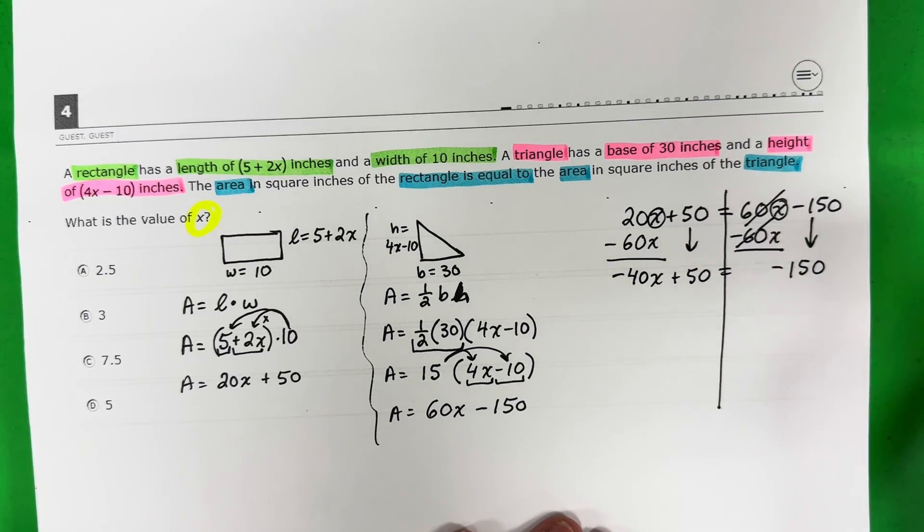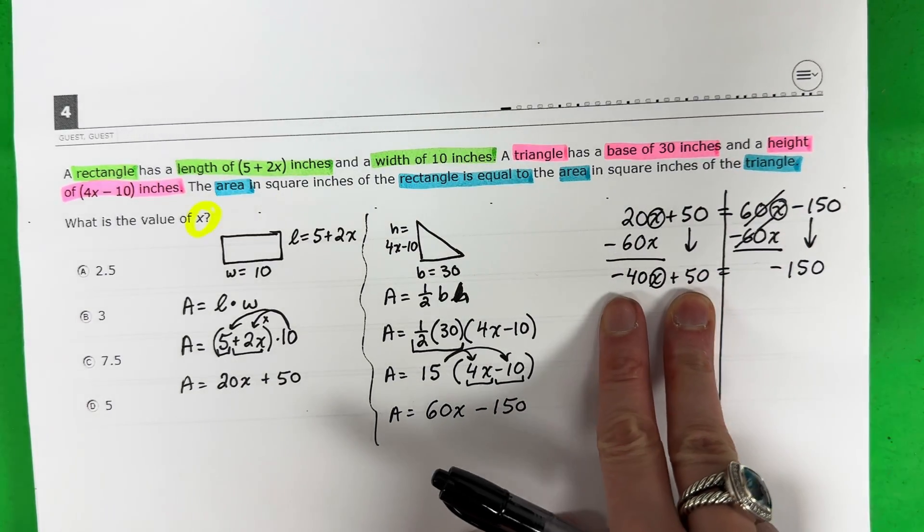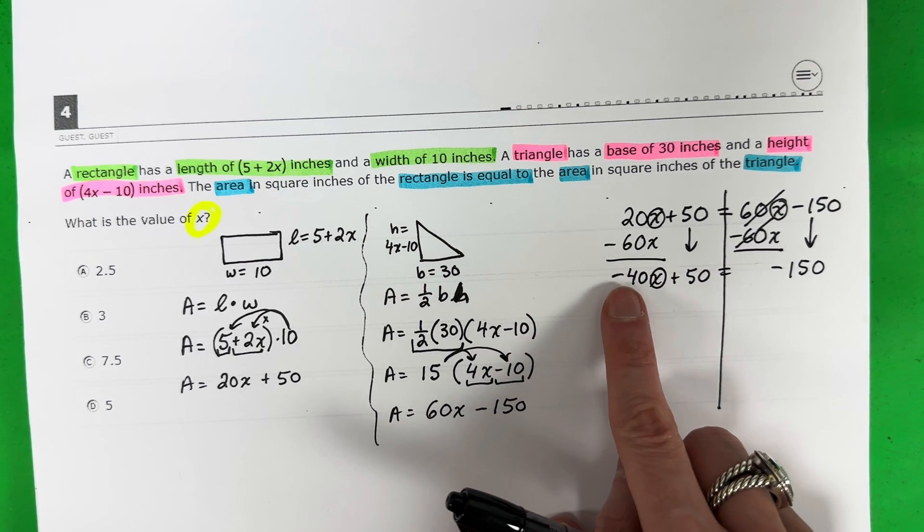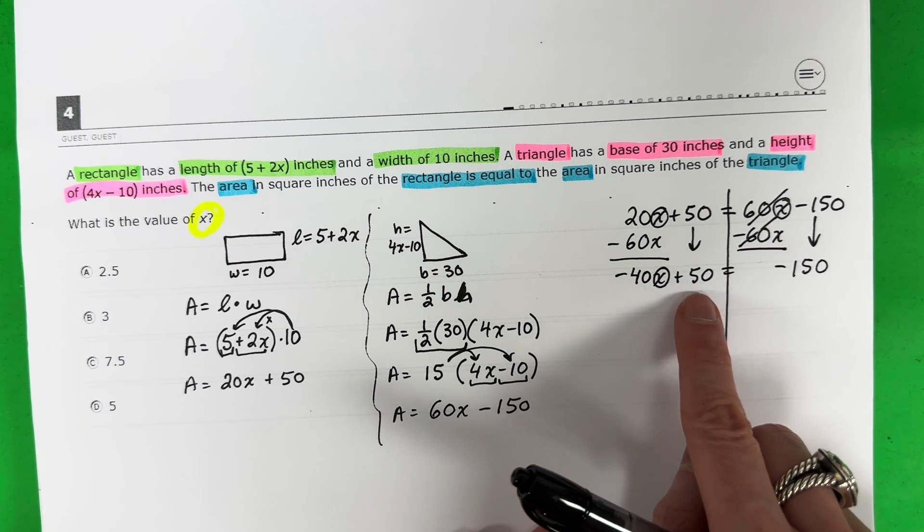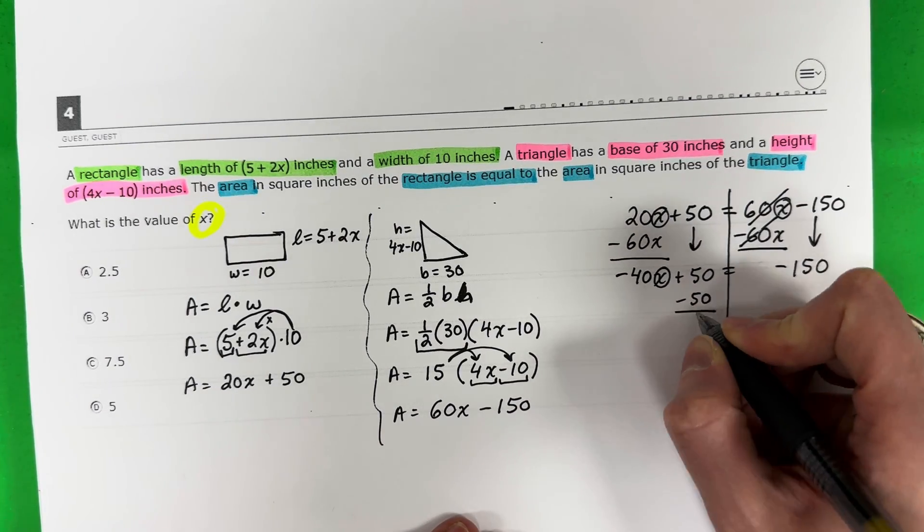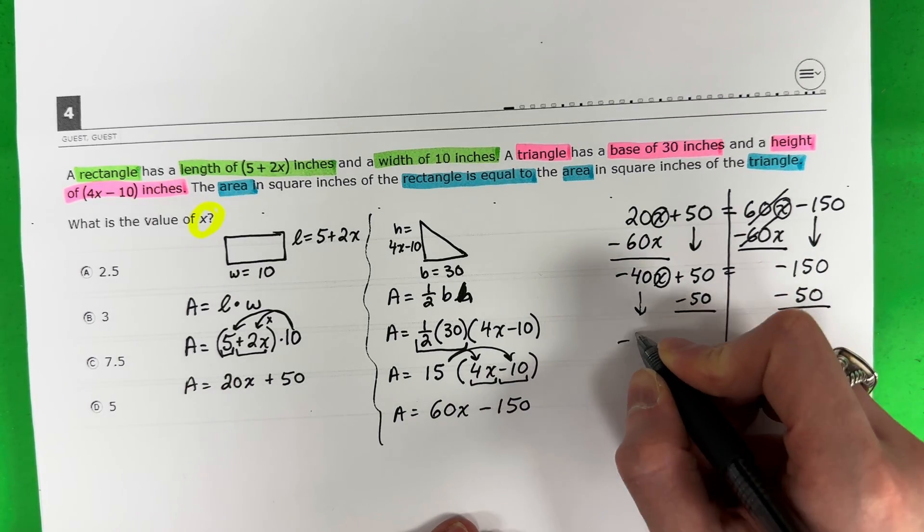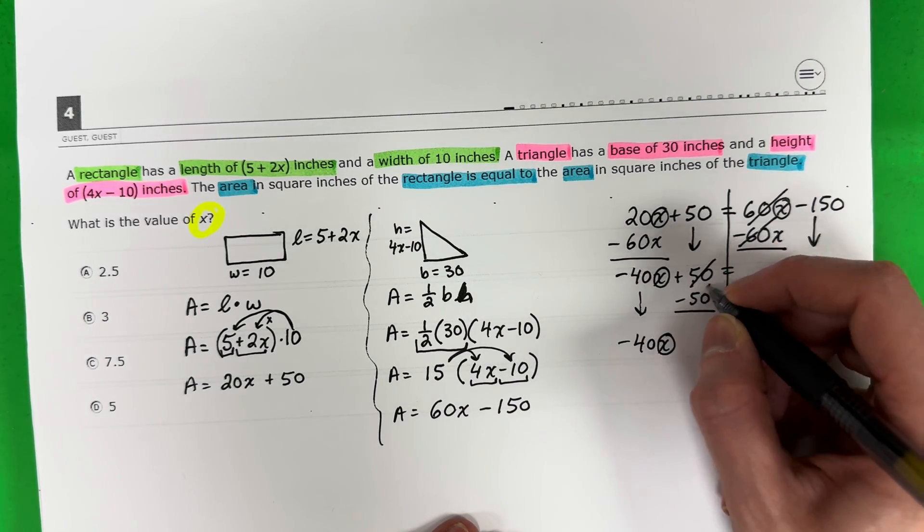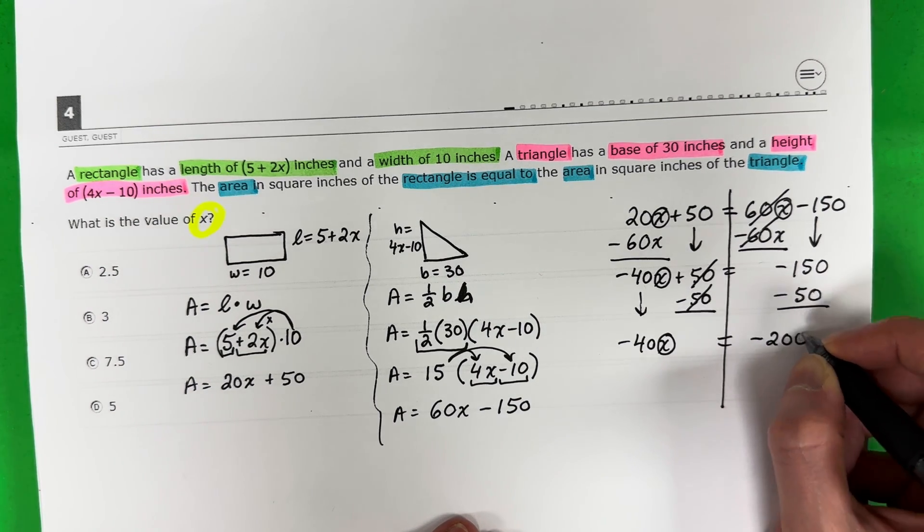I want the x alone, but it's not alone. I have two numbers with x right over here, negative 40 and positive 50. Never move the number that's touching the letter first. So I will not move negative 40. I will move positive 50 first. The opposite of positive is negative. Negative 50. Copy down, negative 40x. Circle that letter. 50 minus 50 is 0 equals negative 150 minus 50 is negative 200.